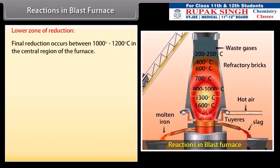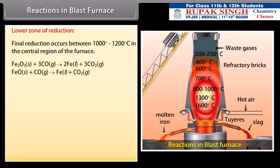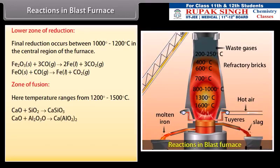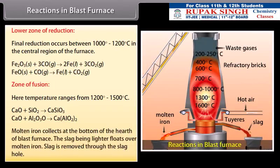Lower zone of reduction: Final reduction occurs between 1000 degree to 1200 degree Celsius in the central region of the furnace. Carbon obtained by dissociation of carbon monoxide combines with iron and impurities also get dissolved in molten iron. Zone of fusion: Here, temperature ranges from 1200 degree to 1500 degree Celsius. Limestone decomposes into calcium oxide which acts as a flux and combines with the impurities of SiO2 and Al2O3 and removes them as slag. Molten iron collects at the bottom of the hearth of blast furnace. The slag being lighter, floats over molten iron. Slag is removed through the slag hole.